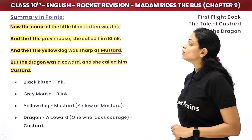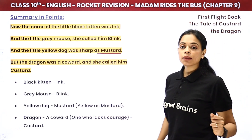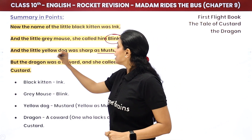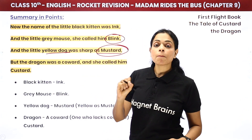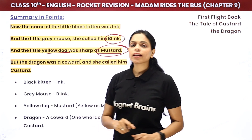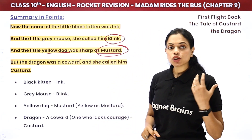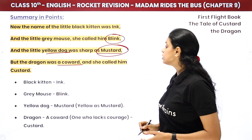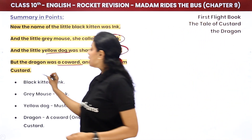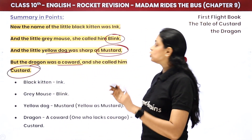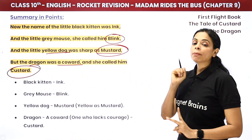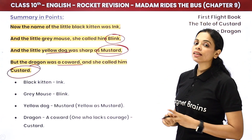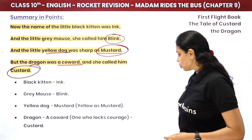The name of the little black kitten was Ink. The grey mouse's name was Blink. The yellow dog was sharp as mustard — so his name was Mustard. But the dragon was a coward, and she called him Custard. So remember: kitten — Ink, mouse — Blink, dog — Mustard, dragon — Custard.